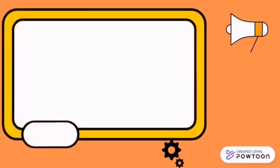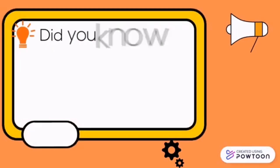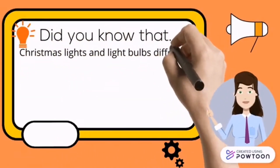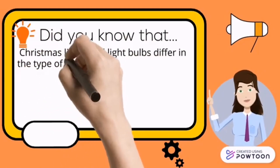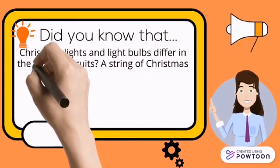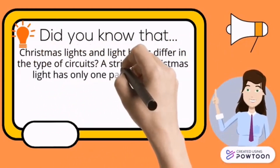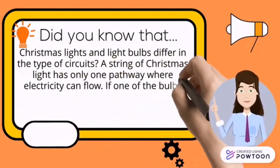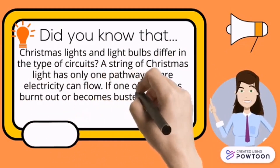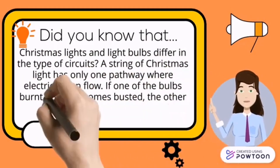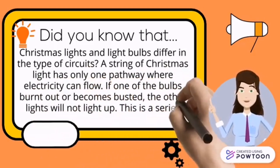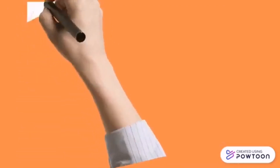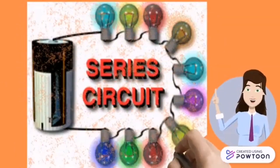Did you know that Christmas lights and light bulbs differ in the type of circuits? A string of Christmas lights has only one pathway where electricity can flow. If one of the bulbs burns out or becomes busted, the other lights will not light up. This is a series circuit — here is an example of a series circuit.